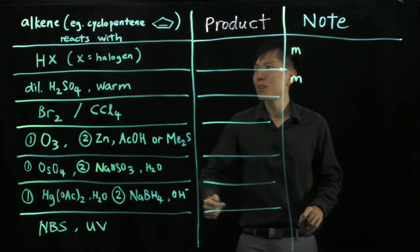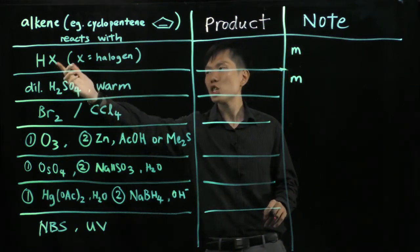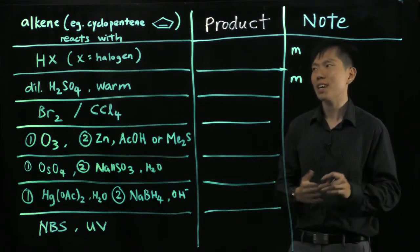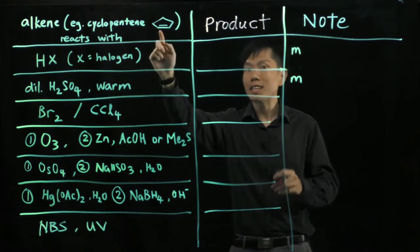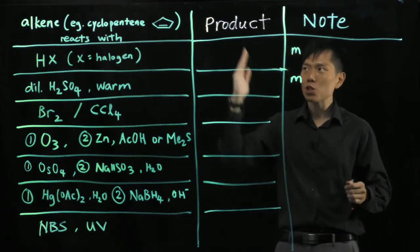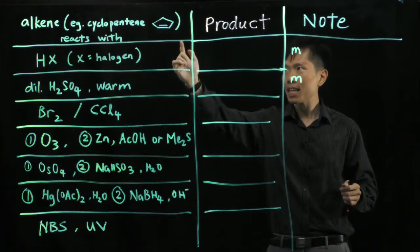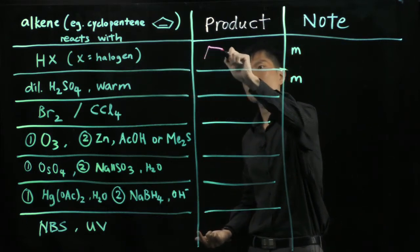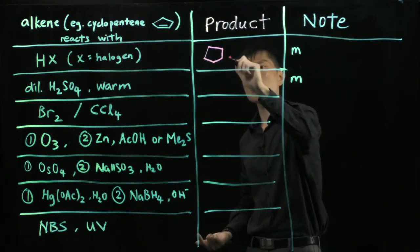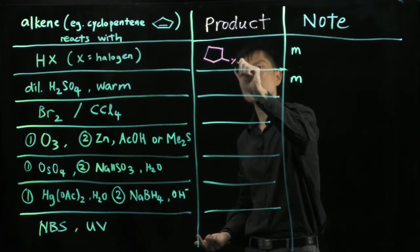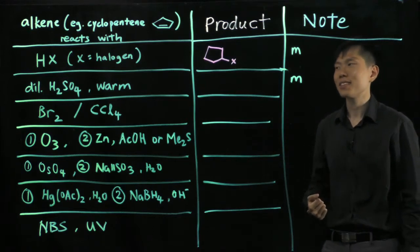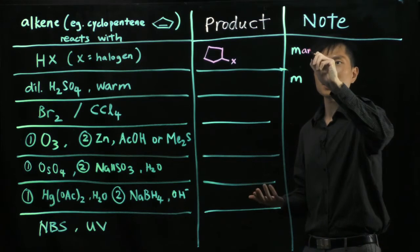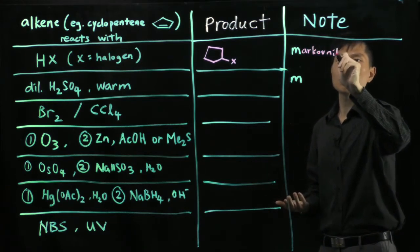So first up, if I react a hydrogen halide, HX I can call it, hydrogen bromide, hydrogen chloride, HI, what you get is the double bond opens up and the H goes to one of the carbons, the X, the halogen, goes to the other carbon. So your product is just a cyclopentyl halide, an alkyl halide. The note here will be it follows the Markovnikov rule.